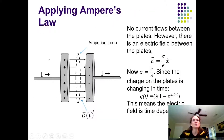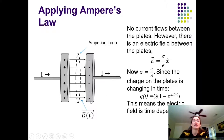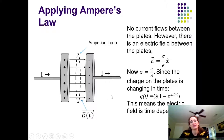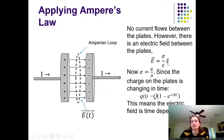Here's a picture of what I'm talking about. The positive plate is on the left, the negative plate on the right. For a charging capacitor, the current flows toward the positive plate and away from the negative plate. The Amperian loop is drawn between the plates, and the electric field lines point straight from positive to negative. For a parallel plate capacitor, the magnitude of the electric field is σ/ε.